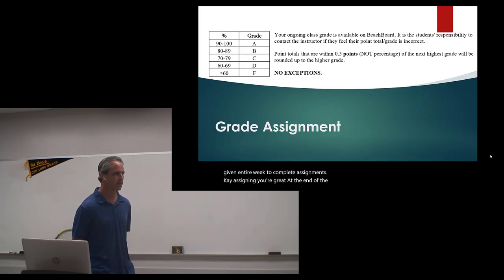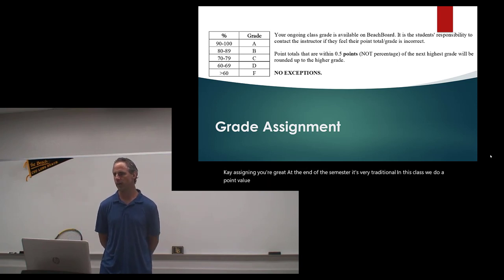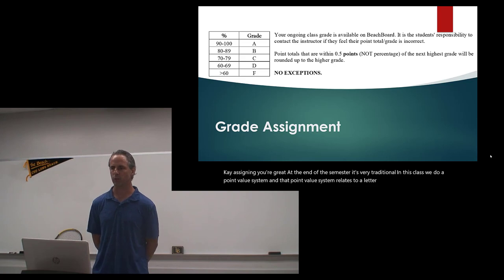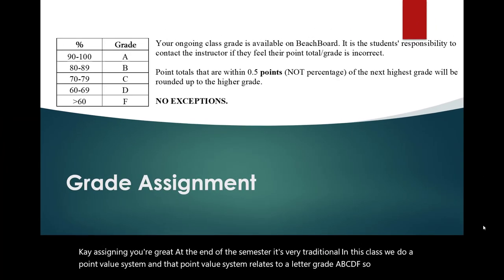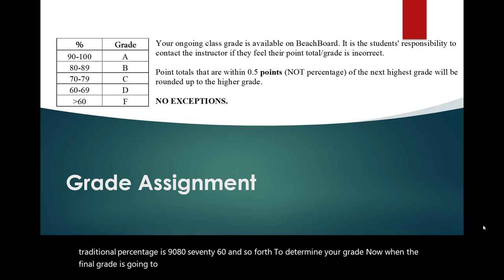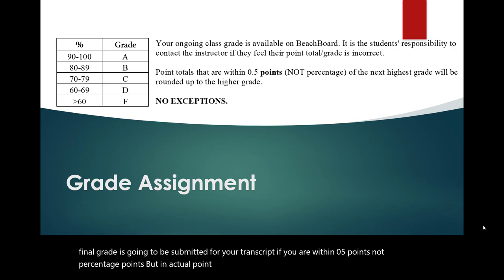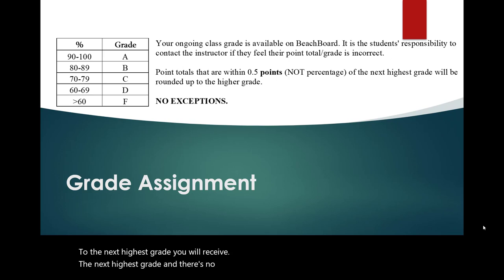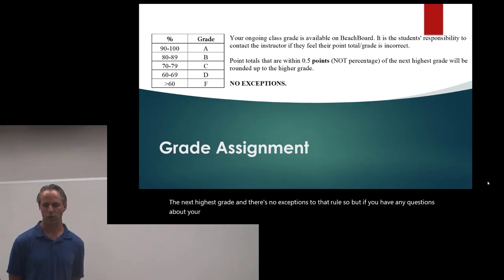Assigning your grade at the end of the semester is very traditional in this class. We use a point value system that relates to a letter grade — A, B, C, D, and F — with traditional percentages of 90, 80, 70, 60% and so forth to determine your grade. When the final grade is going to be submitted for your transcript, if you are within 0.5 points — not percentage points, but an actual point value — to the next highest grade, you will receive the next highest grade. There are no exceptions to that rule.